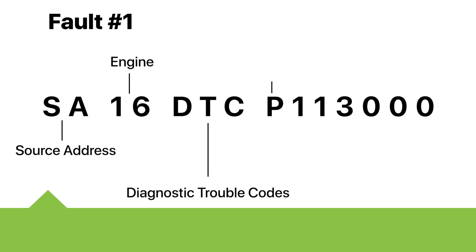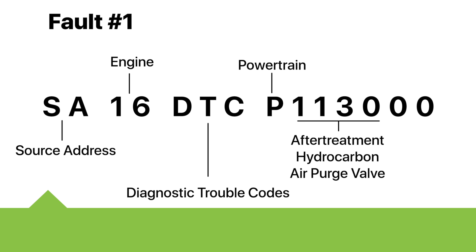P stands for powertrain. 1130 stands for after treatment hydrocarbon air purge valve. 00 stands for stuck closed. This is the system failure mode that sets this fault.